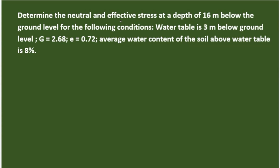The problem is: determine the neutral and effective stress at a depth of 16 meters below the ground level for the following conditions. The water table is 3 meters below the ground surface. Specific gravity G equals 2.68, void ratio E equals 0.72, and average water content above the water table is 8%.